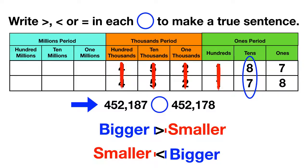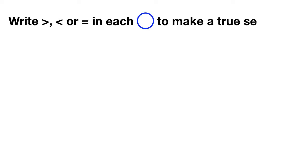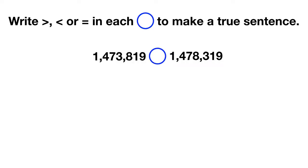Because our first number is the bigger one, we'll write our symbol like this. Let's do one of these together. Let's write a greater than, less than, or equal symbol in each circle to make a true sentence, and here are the two numbers we're comparing.